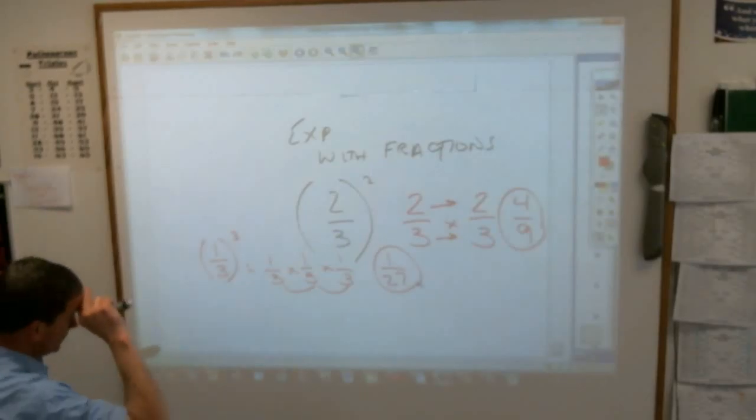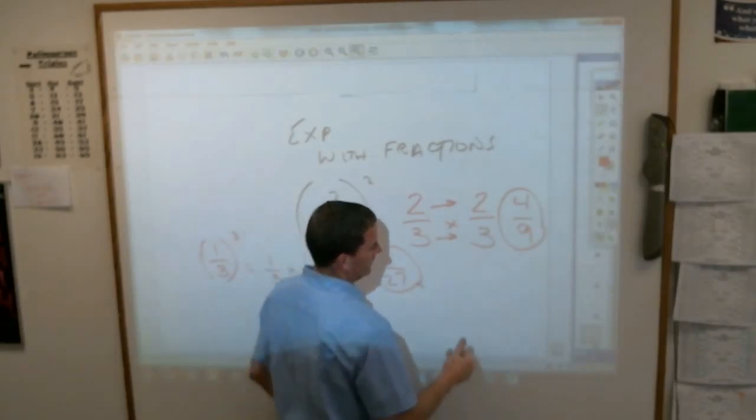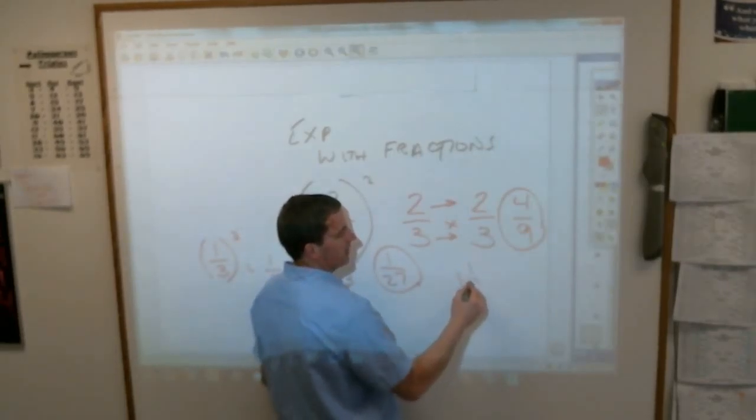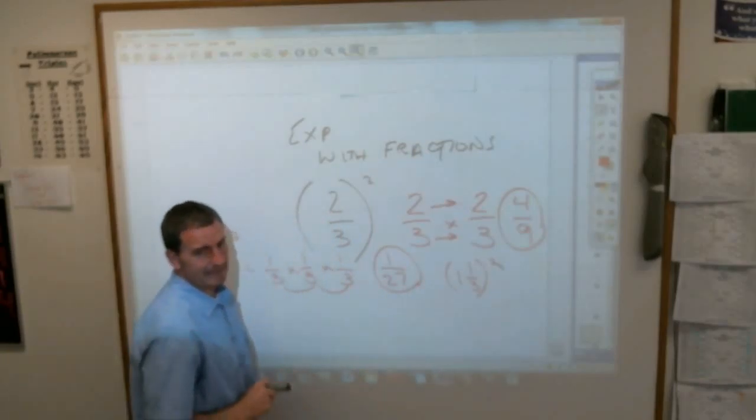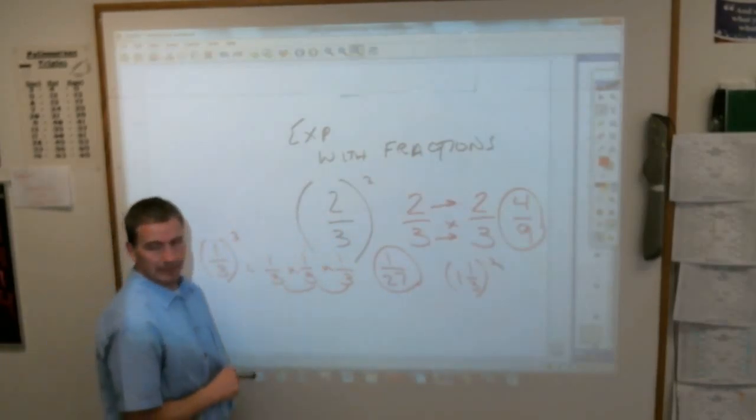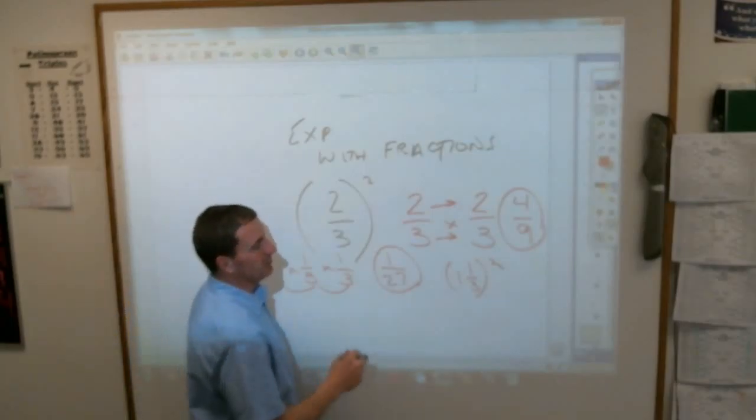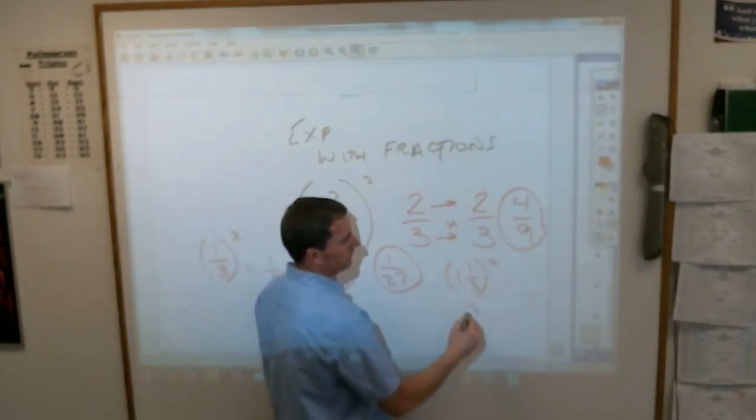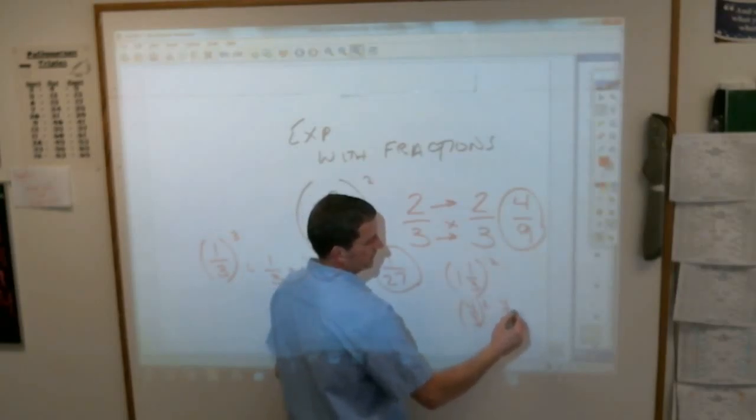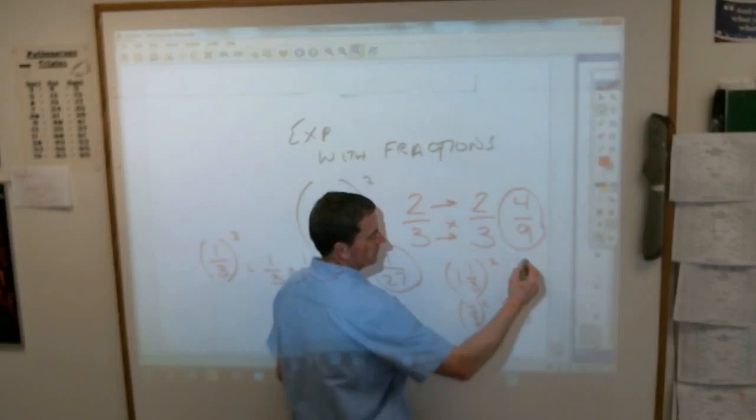A couple other things. What if it is a mixed number? What about 1 and 1 third squared? Anybody suggestions out there? Brianna? Yeah, you need to make it improper first. Make it 4 thirds. And then square that. 4 thirds times 4 thirds. Which is 16 ninths. Which is 1 and 7 ninths.